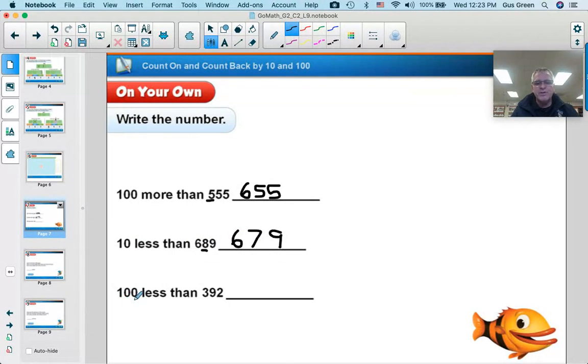So 10 less than 689 is 679. Now let's try 100 less than 392. So I'm going to focus again on the hundreds digit. And I'm going to make it 1 less. So 392 has 3 in the hundreds. Let's make it 1 less. Make it 2 in the hundreds. We'll keep 9 in the tens digit and 2 in the ones digit. So 100 less than 392 is 292.